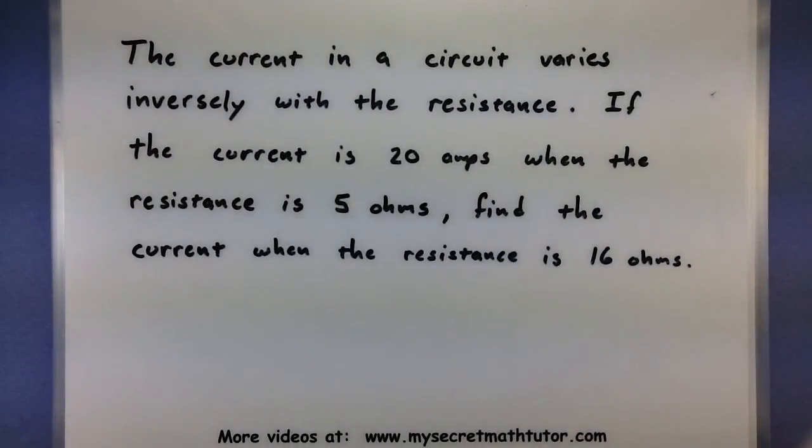So the current in a circuit varies inversely with the resistance. And if the current is 20 amps when the resistance is 5 ohms, find the current when the resistance is 16 ohms. So this is kind of a fun problem.